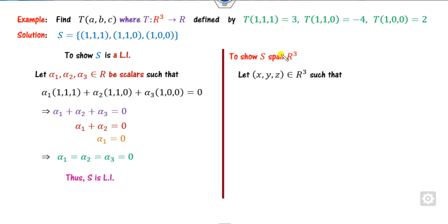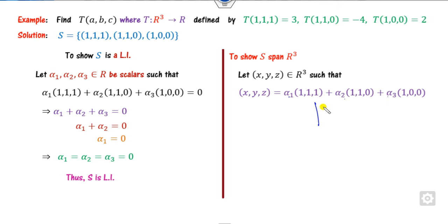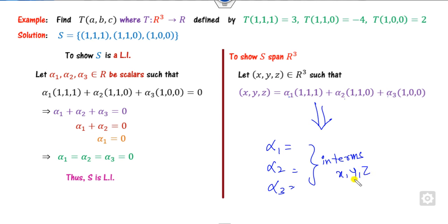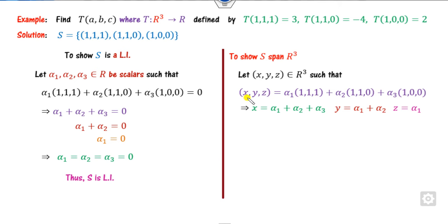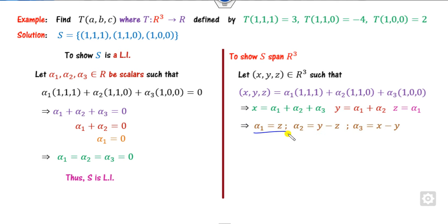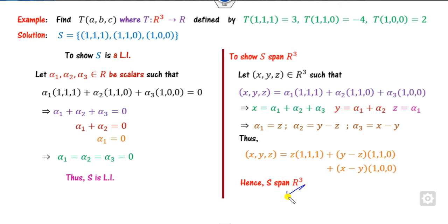Now the second step: show S is a span. The domain is R³; consider any element (x, y, z). Express it as alpha_1·(1,1,1) + alpha_2·(1,1,0) + alpha_3·(1,0,0). Equating coefficients: alpha_1 = z, alpha_2 = y − z, alpha_3 = x − y. Since you can find alpha_1, alpha_2, alpha_3 for any (x,y,z), S is a span.